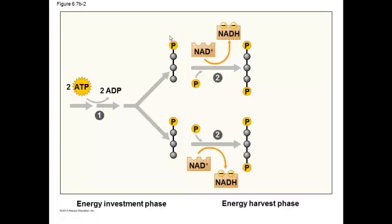In the next step, this is where a molecule you'll become at least familiar with the name of, NAD+, comes into play for each of these molecules. NAD+ essentially accepts two electrons from your pyruvic acid and attaches a phosphate to the other end. It accepts two electrons and attaches a phosphate. Therefore, NAD+ becomes NADH.